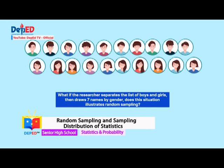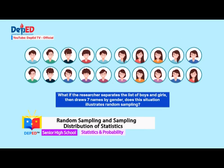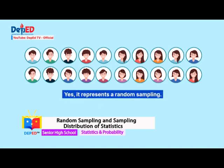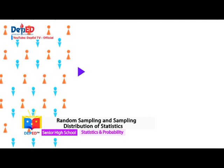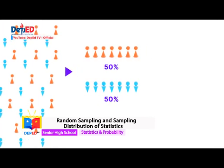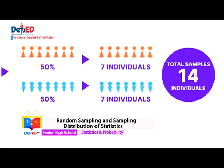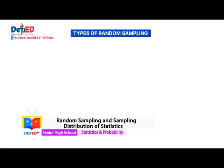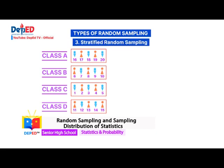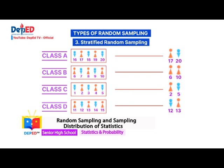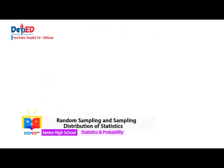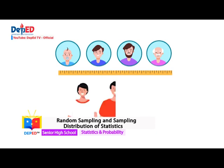What if the researcher separates the list of boys and girls, then draws seven names by gender? This illustrates stratified random sampling because the students are divided into two different strata or groups — boys and girls. With a proportional number for each group, samples are selected at random from these two groups. In stratified random sampling, the population is divided into different strata or divisions, and the number of samples is proportionately picked from each stratum so that all strata are represented. This can also be done by age bracket, grade level, or section.